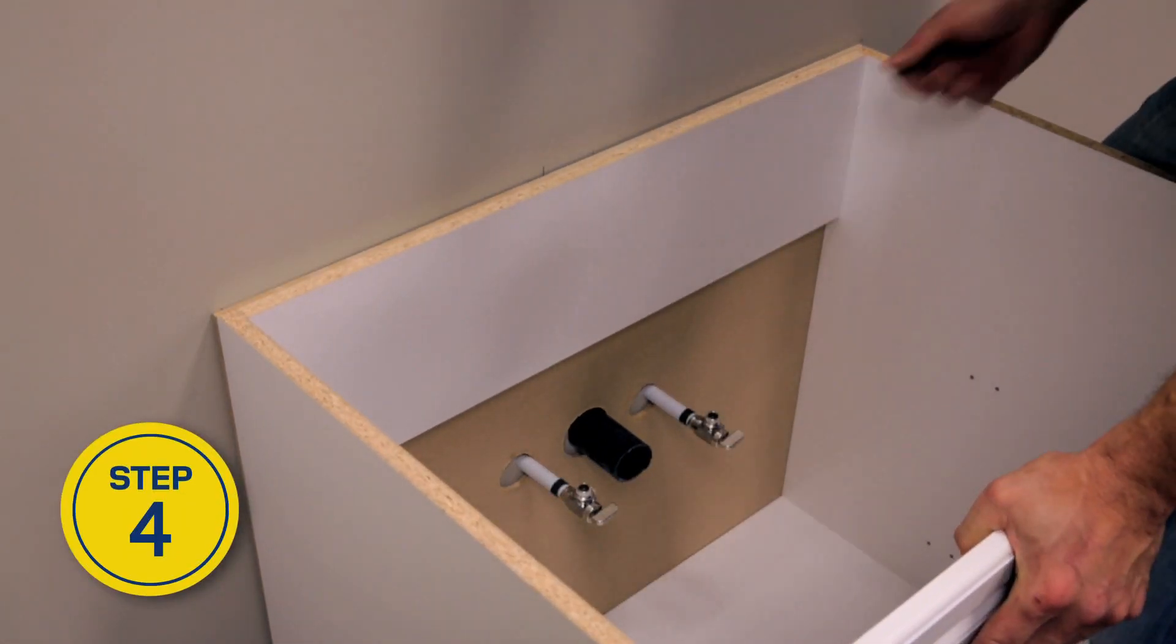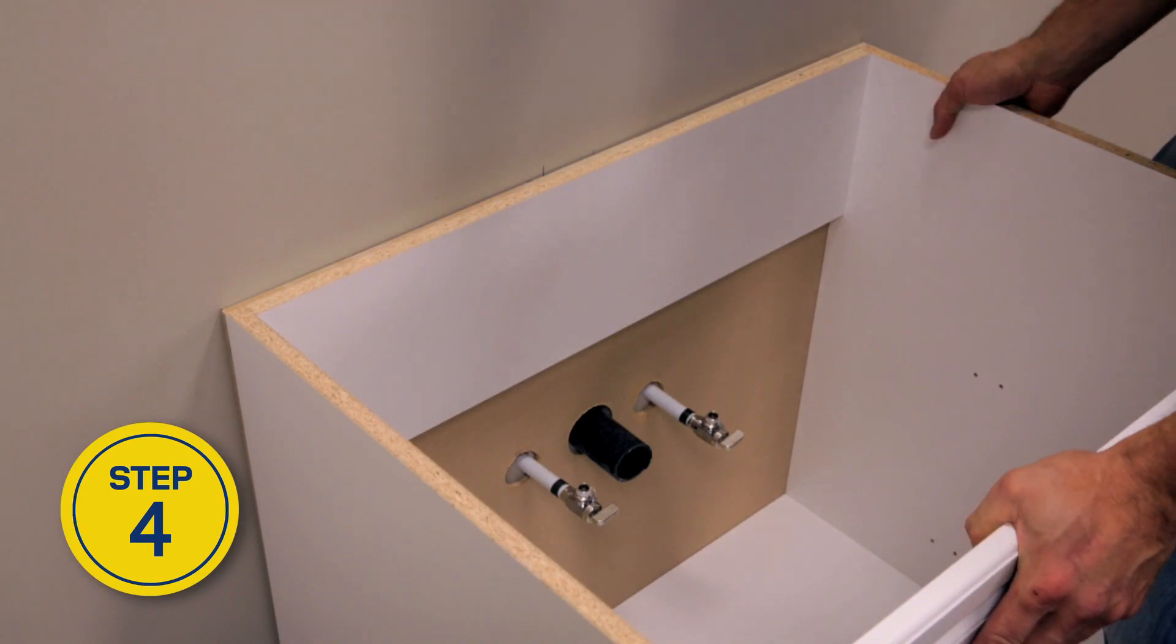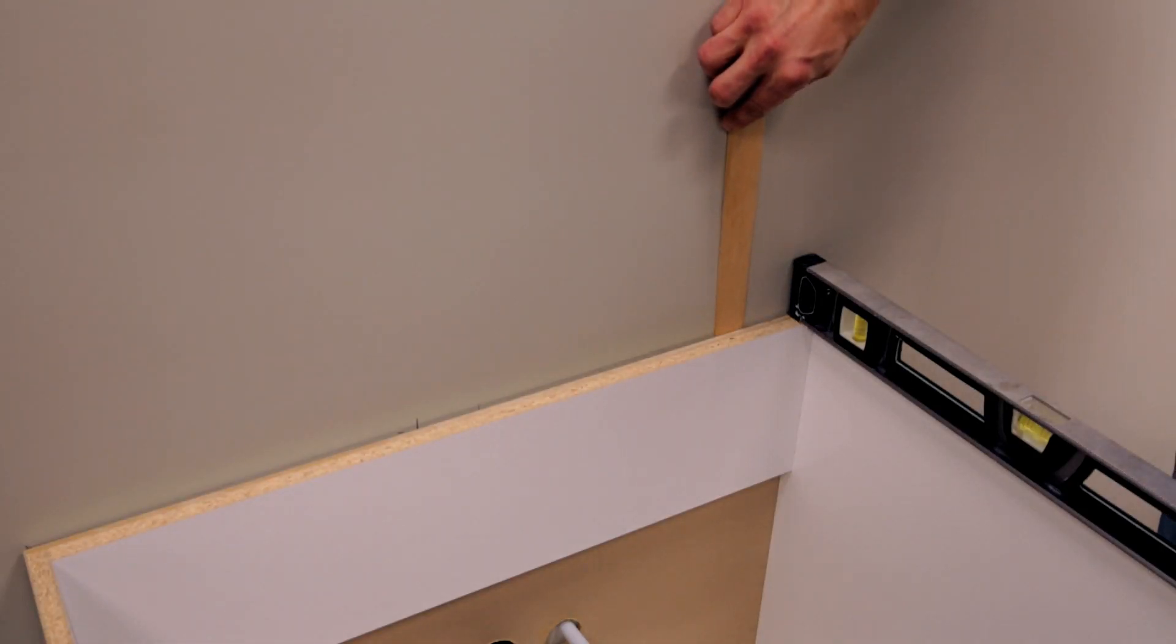Move the cabinet in place and make sure that it's plumb and level. If it's not level, shim the cabinet along the stud marks on the wall and on the floor.